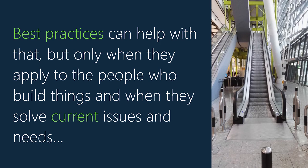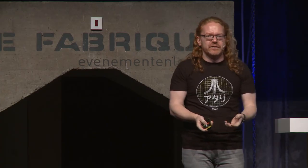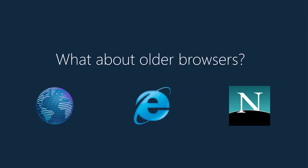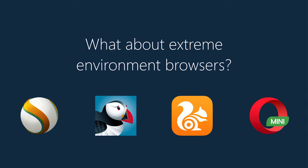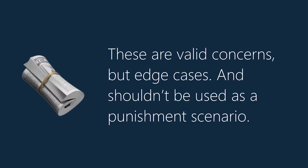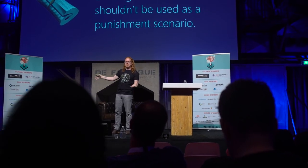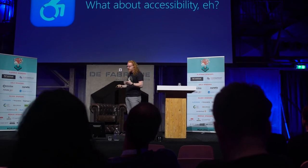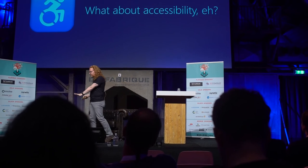Best practices can help, but only when they apply to the people building things and when they solve current issues. When I talk about progressive enhancement at a React event, they say: "What do you want? We've heard that for 20 years. What about old Android browsers? What about Netscape? What about extreme-environment browsers like Silk, Puffin, UC Browser, or Opera Mini?" These are used by millions of people — you've probably never heard of them, but they're used to access your services. These are valid concerns but they're edge cases and shouldn't be used as a punishment scenario.